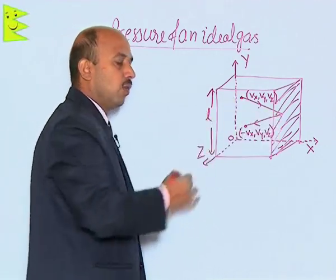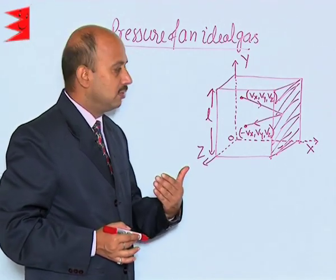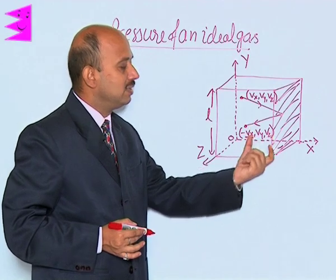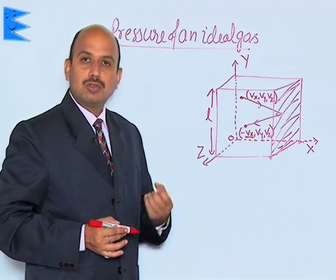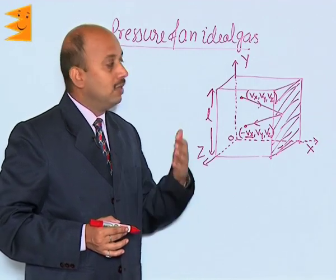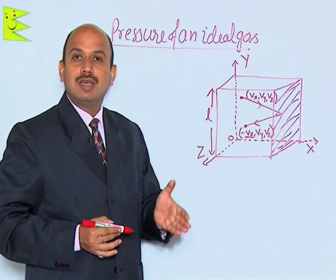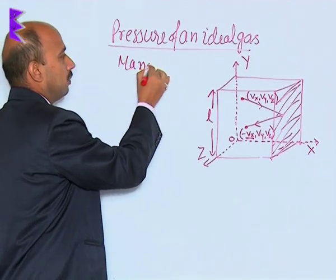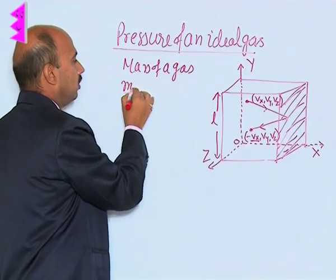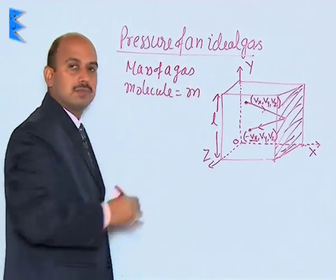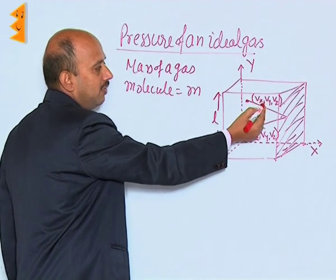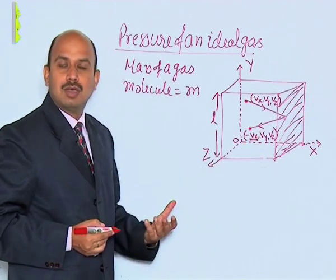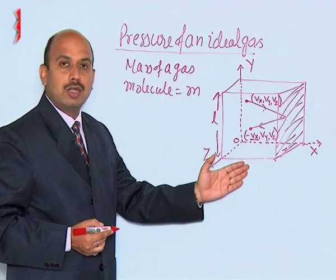When this molecule collides with this wall, its velocity changes direction but not magnitude. So the velocity will become minus Vx, but the other two components Vy and Vz remain unaffected, because we are taking the motion of the molecule along the x-axis only, and the collision is with the wall which is perpendicular to the YZ plane.